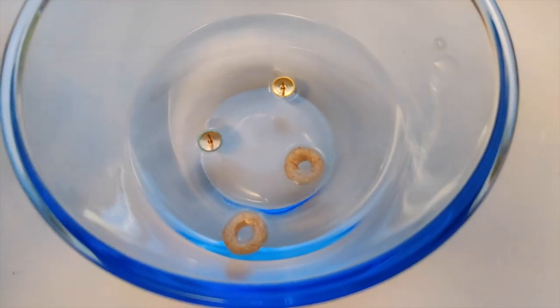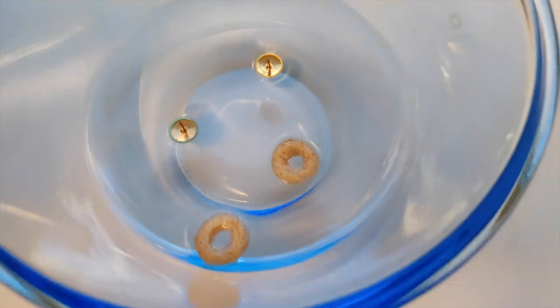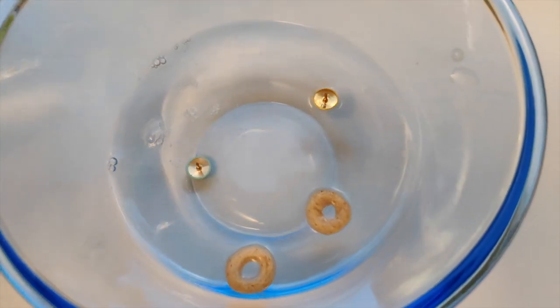We can see this by adding soap, breaking the surface tension, which causes the thumbtacks to sink while the Cheerios continue floating.